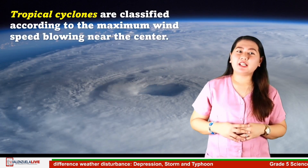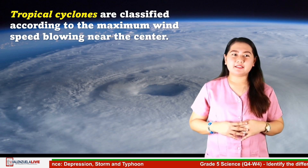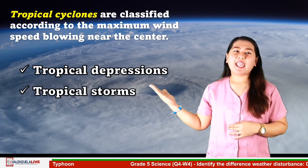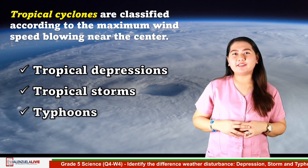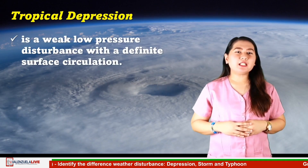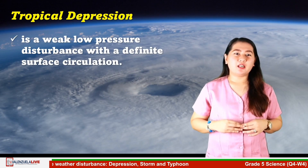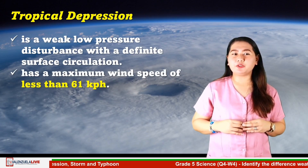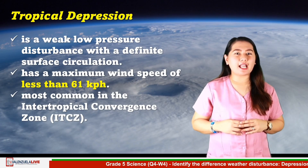Tropical cyclones are classified into three according to the maximum speed of the wind blowing near the center. These are tropical depressions, tropical storms, and typhoons — the common cyclones experienced by our country. According to PAGASA, a tropical depression is a weak low pressure disturbance with a definite surface circulation and a maximum wind speed of less than 61 kilometers per hour. It is most common in the Intertropical Convergence Zone or ITCZ.